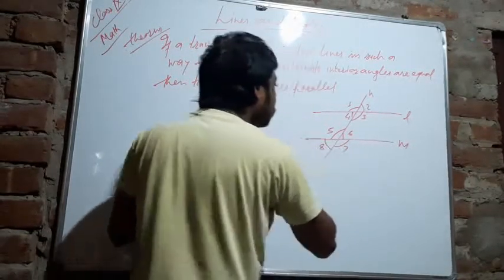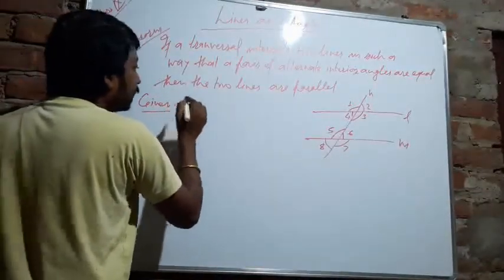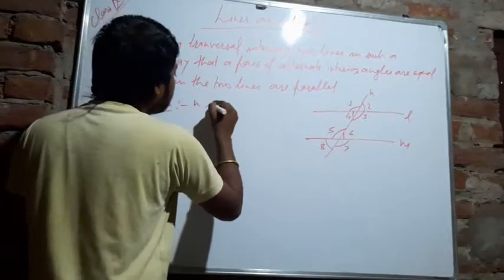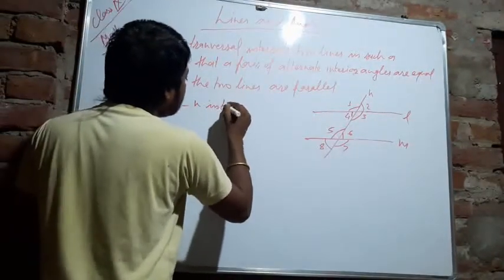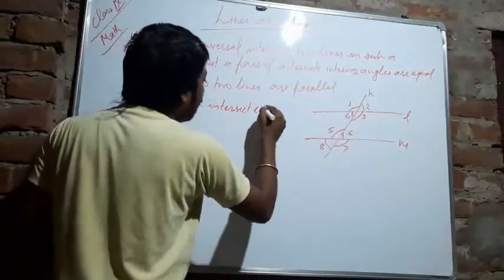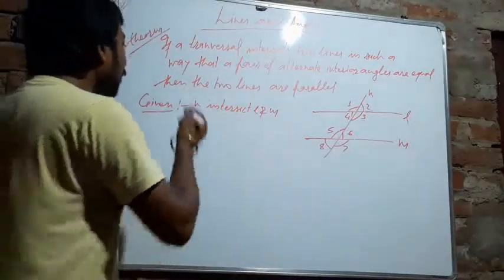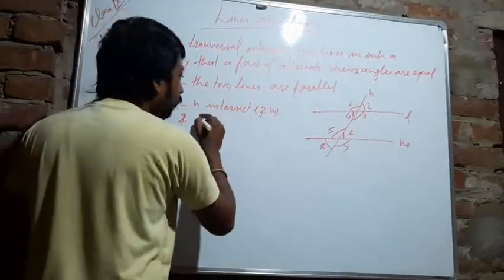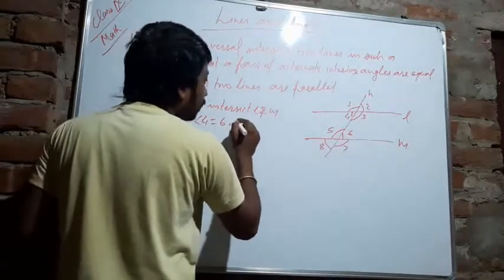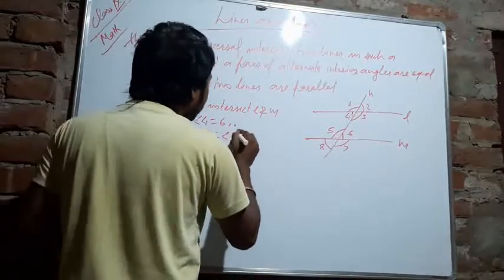Given: transversal N intersects lines L and M. It is given that angle 4 equals angle 6, and angle 3 equals angle 5.